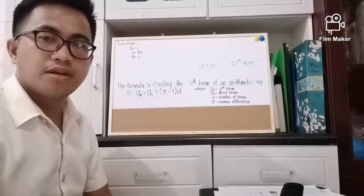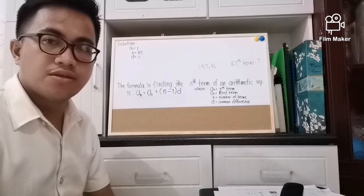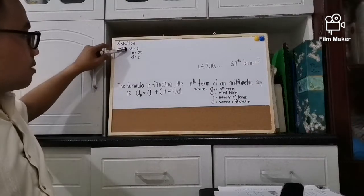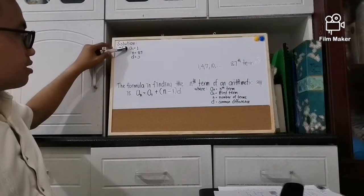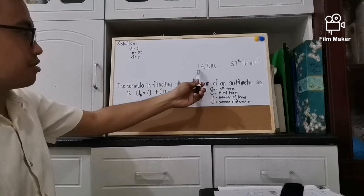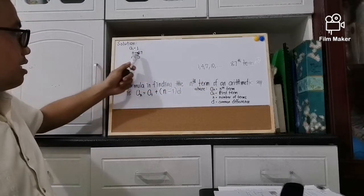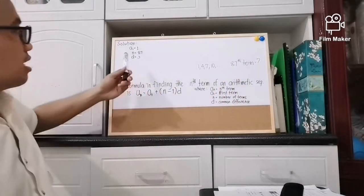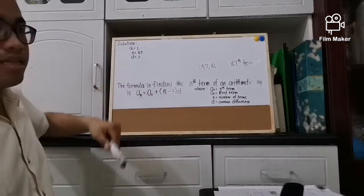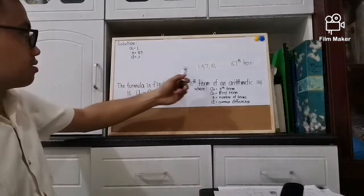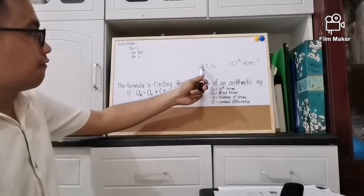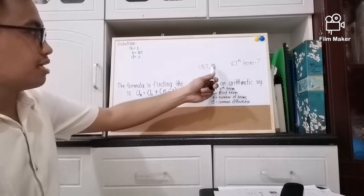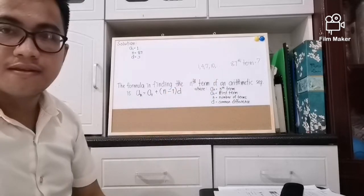Now let's solve for the 87th term using the formula. First we write the given: a sub 1 is 1 because that is the first term in the sequence; n is 87 because that is the term being asked; and d is 3 because the common difference is solved as: 4 minus 1 is 3, 7 minus 4 is 3, 10 minus 7 is 3.